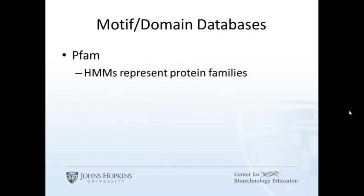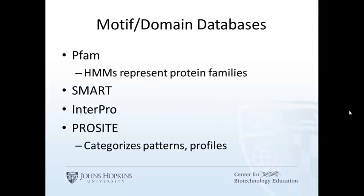Here are a few databases of protein signatures. PFAM is based on hidden Markov models, or HMMs, and are quantitative. The SMART database is also based on HMMs. Interpro is a database with a search mechanism for searching other databases, including PFAM and SMART. ProSite has both patterns and profiles. The patterns use regular expressions, and the profiles use the position-specific scoring matrix, or POSM.